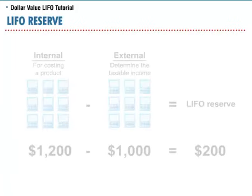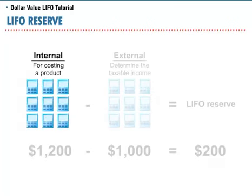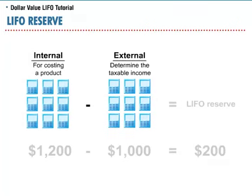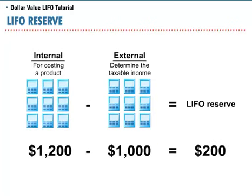The difference between the inventory method used for internal reporting purposes and LIFO is referred to as the allowance to reduce inventory to LIFO, or the LIFO reserve. Suppose the cost of calculators using FIFO for internal purposes was determined to be $1,200. The same company uses LIFO for determining its taxable income and computes the cost of these same calculators to be $1,000. The difference between the internal $1,200 cost and the external $1,000 cost is a $200 LIFO reserve.